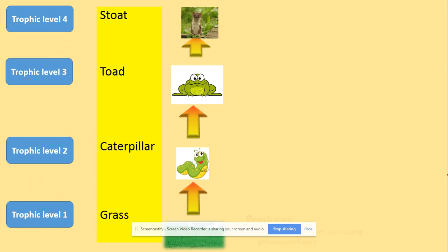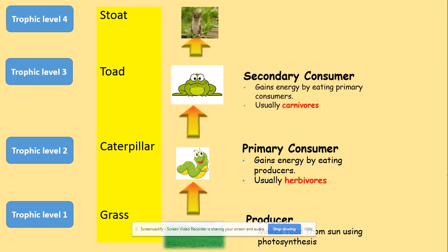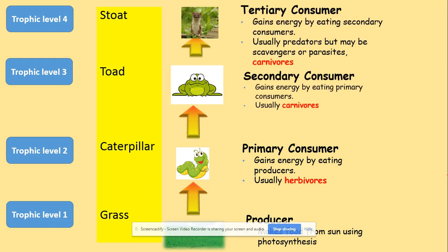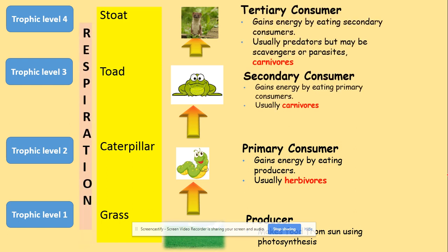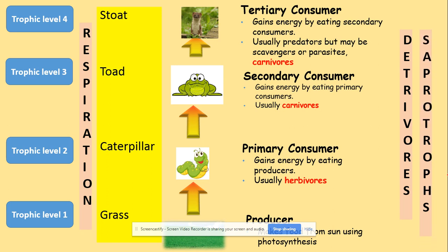Here is an example of the trophic levels: producers, primary consumers, secondary consumers, tertiary consumers. Each of those organisms is going to lose energy through respiration, and when they die they will be decomposed by decomposers, or saprobiont in other words.